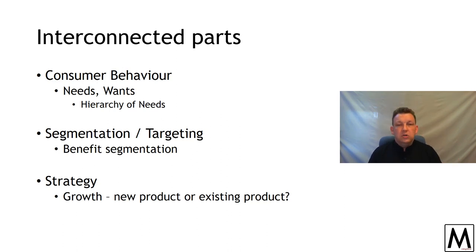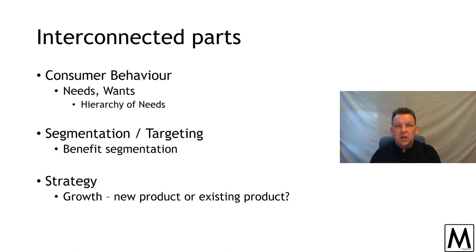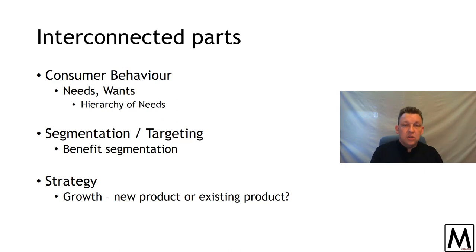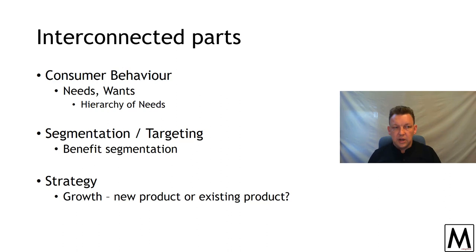In the first couple of weeks we discussed the idea of new product versus existing product. The Ansoff Matrix starts from the position of: do we already offer something, or do we need to offer something new? The something is the product. If we look at things like social media, social media is an idea product or an experience product.